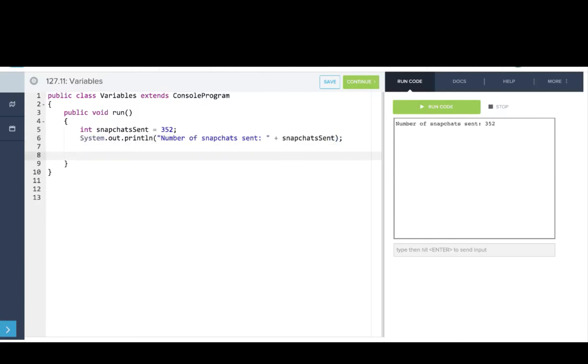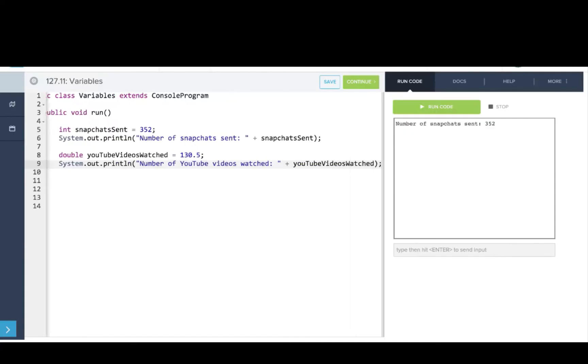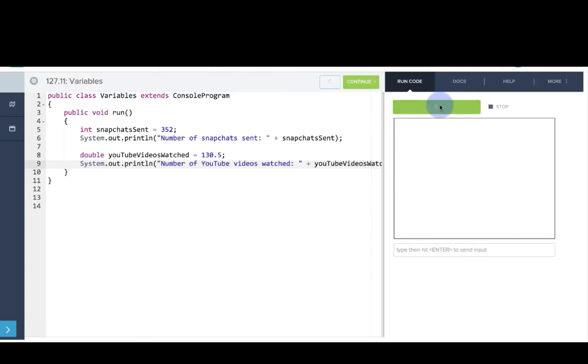Now we'll make another variable. We'll make a double to hold the number of YouTube videos watched. We'll say youtubeVideosWatched equals 130.5 because we didn't finish the last one. We'll say System.out.println number of YouTube videos watched plus youtubeVideosWatched semicolon. Now let's run that. You can see we print out both of the numbers.